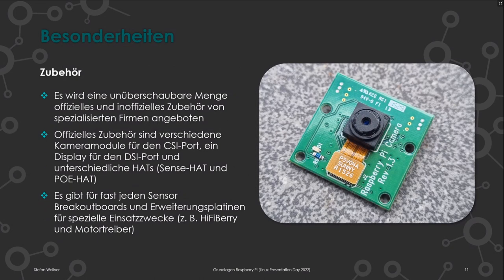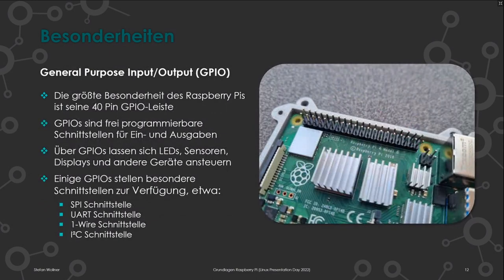Dieses ganze Zubehör hat sich entwickelt, weil der Raspberry Pi etwas ganz Besonderes bietet, was normale PCs nicht bieten: die 40-pinige GPIO-Leiste. GPIO bedeutet programmierbare Ein- und Ausgänge – man kann einen Pin auf 0 Volt (GND) oder auf High (3,3 Volt) setzen. Damit kann man LEDs anschalten oder bei einem Motorboard dem Treiberbaustein sagen, er soll anlaufen. Meistens sind mehrere Pins notwendig: einer zum Einschalten, einer für die Richtung.